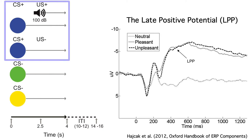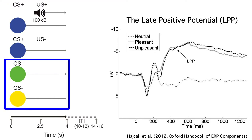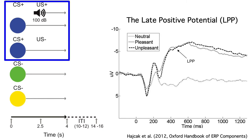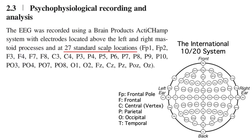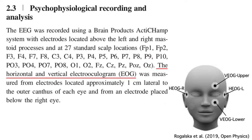As a reminder, subjects saw a CS plus color that predicted the occurrence of a loud noise burst, and they saw two different CS minus colors that predicted the absence of the noise. Felix predicted that the CS plus would elicit a large LPP, which reflects emotional arousal. Felix recorded from 27 scalp electrodes, and he also recorded from horizontal and vertical EOG electrodes.